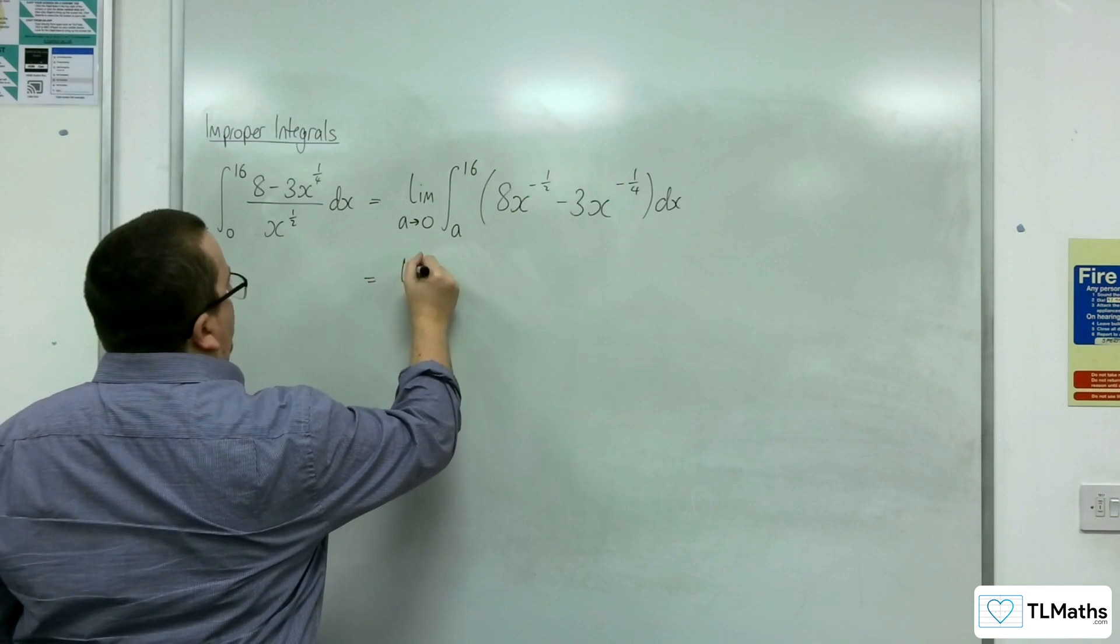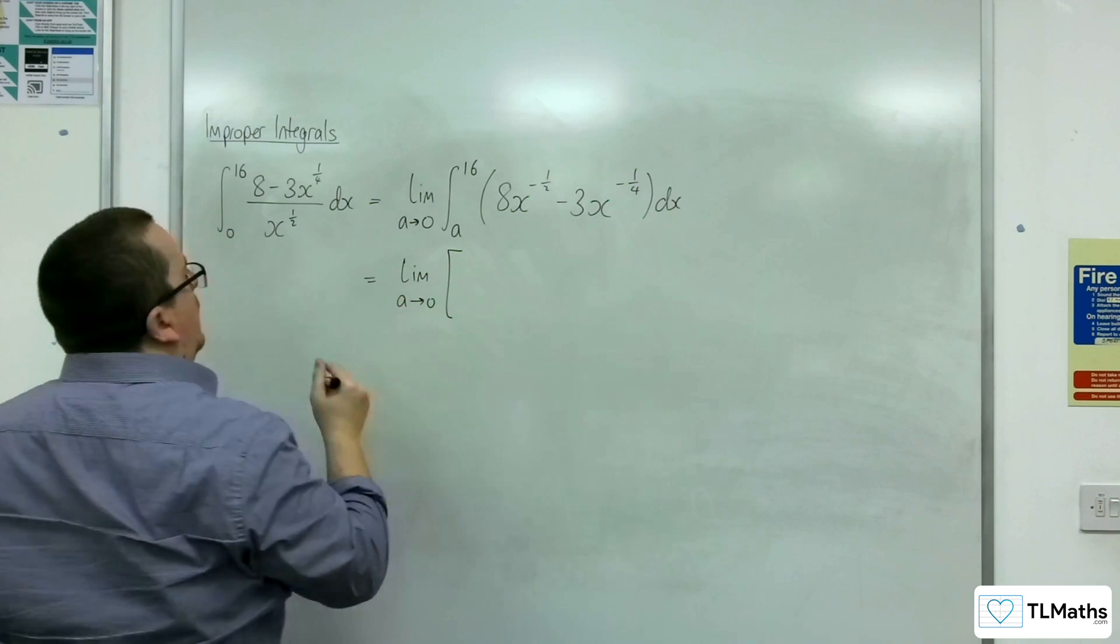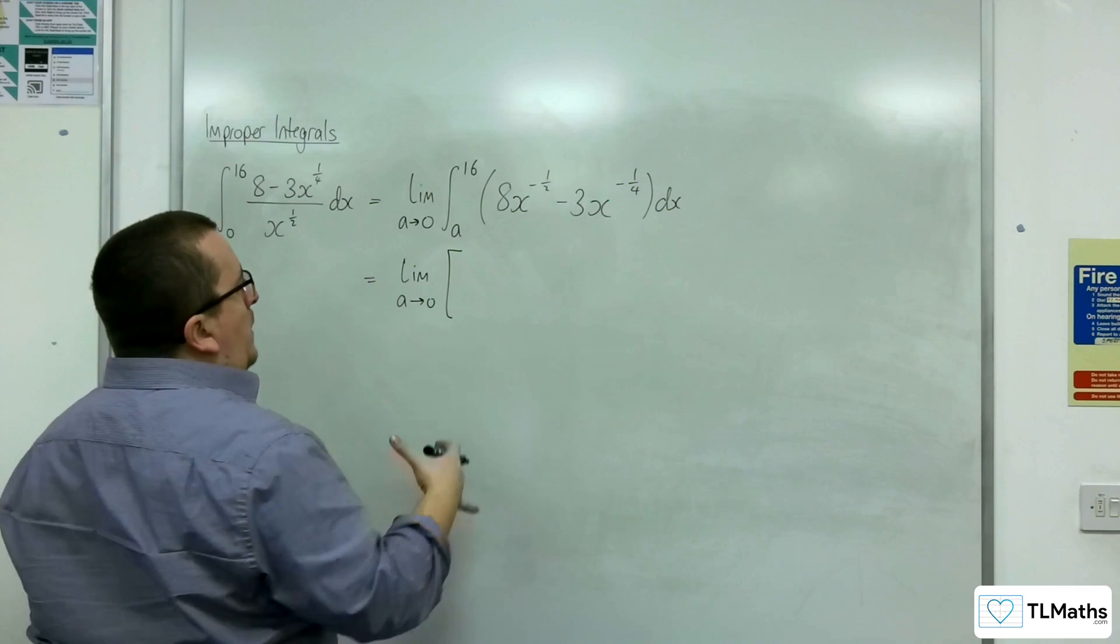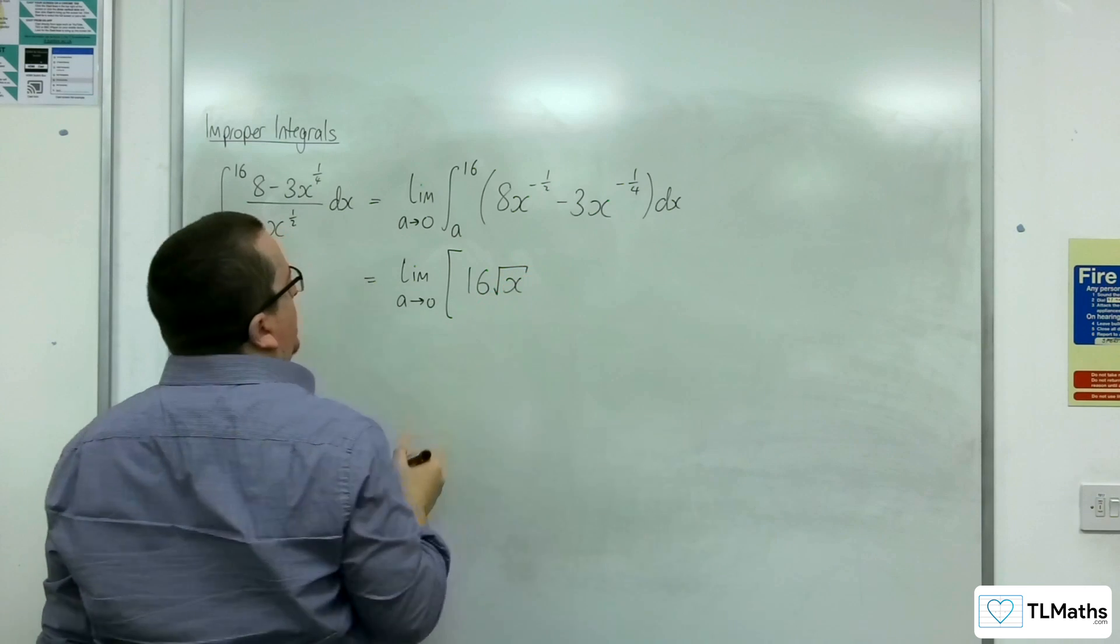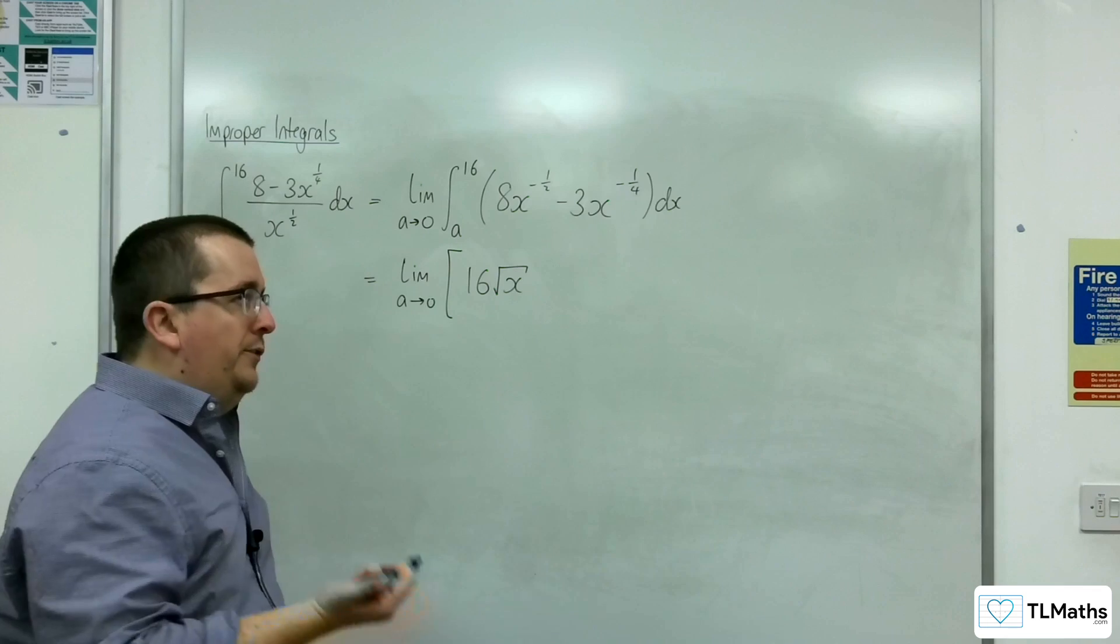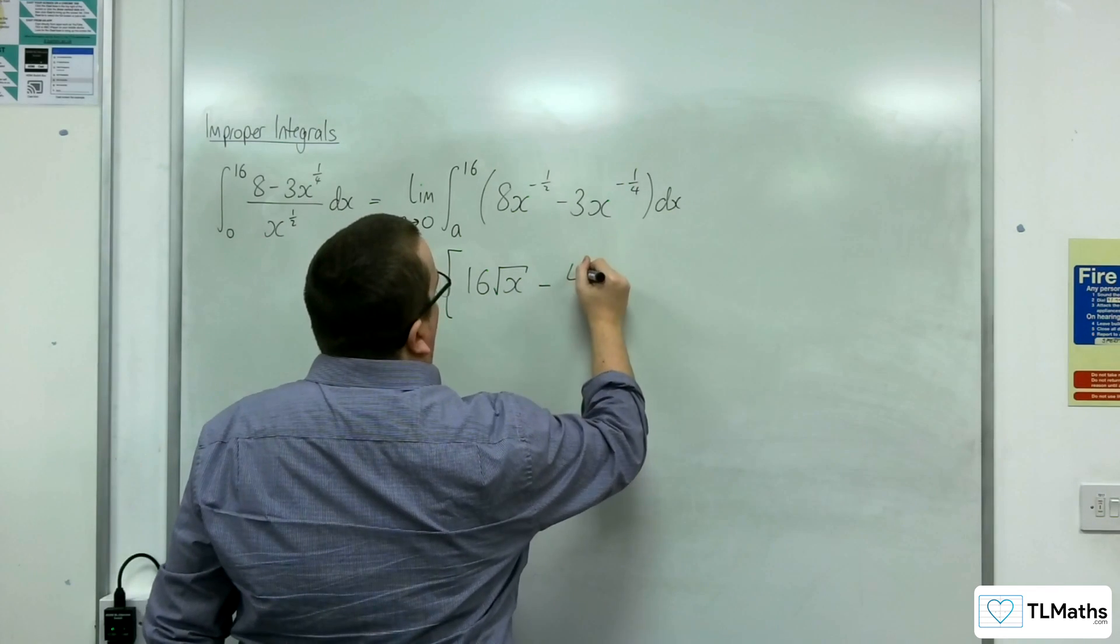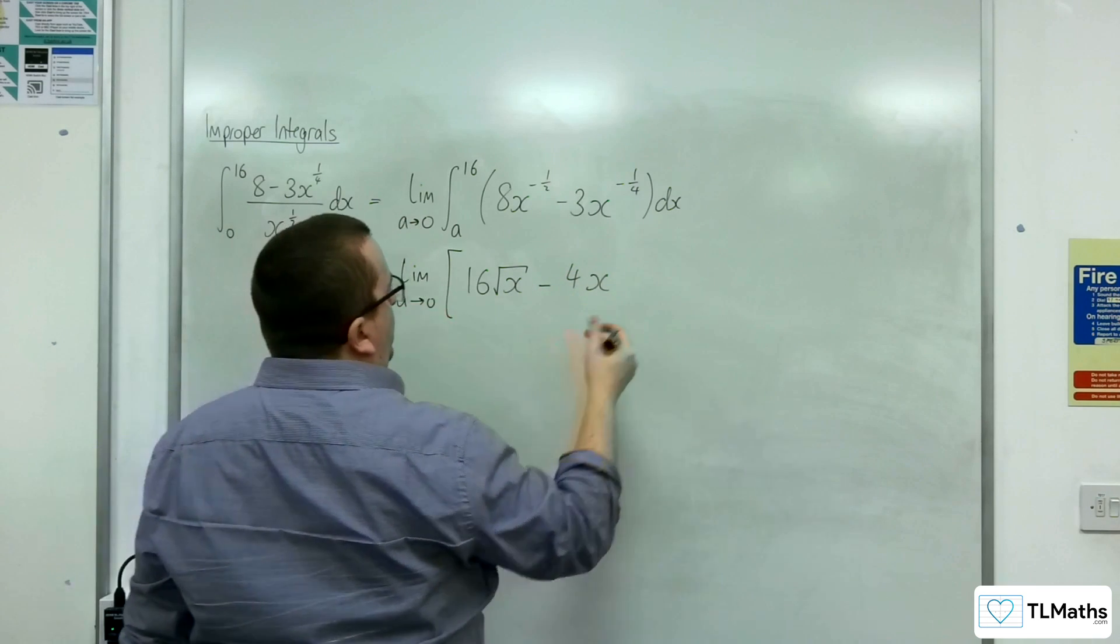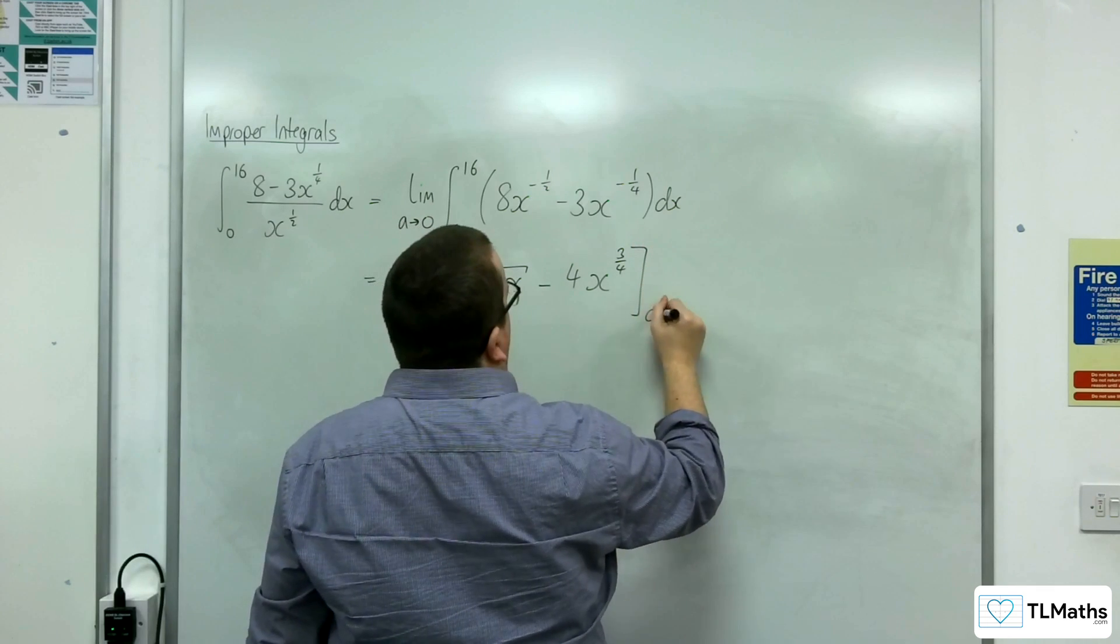So this is going to be equal to the limit as a tends to 0 of, now 8x to the minus a half, add 1 to the power, divide by the new power. So we're going to have 16x to the half, so root x, and then take away 3x to the minus a quarter. Add 1 to the power gets you 3 quarters. Divide by 3 quarters is multiplied by 4 thirds. So minus 4x to the 3 quarters, evaluated between a and 16.